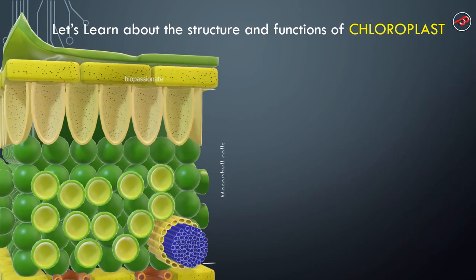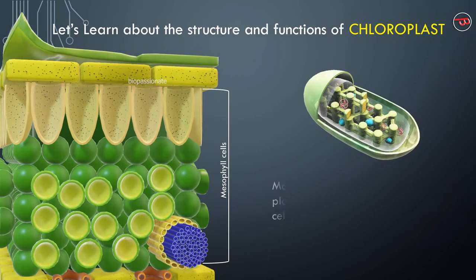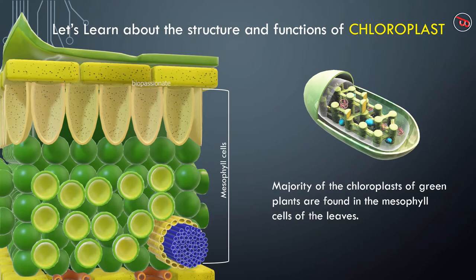When we observe the section of a leaf, we can see elongated spherical cells called palisade and spongy parenchyma, which are together called mesophyll cells. Majority of the chloroplasts of green plants are found in the mesophyll cells of the leaves. These mesophyll cells are present between the upper and lower epidermis.